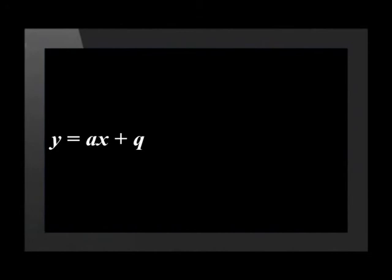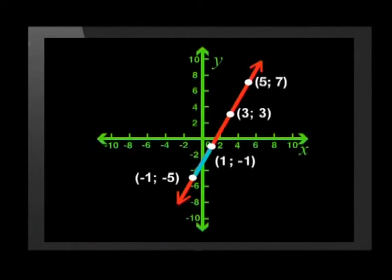First, we found that the formula of a straight line graph can be written in the form y equals ax plus q. Then we saw how we can draw the graph by plotting some of the points on the graph.